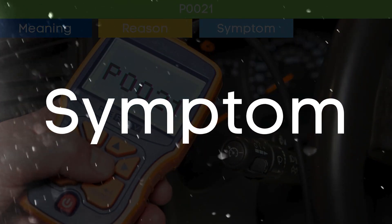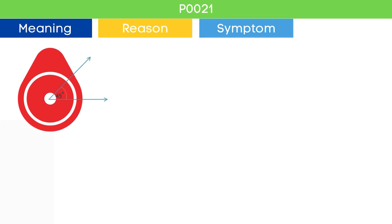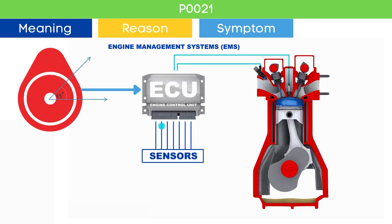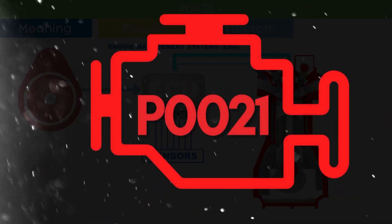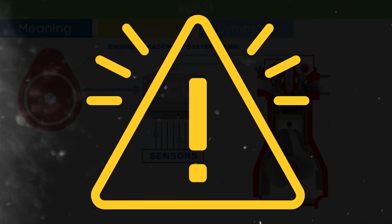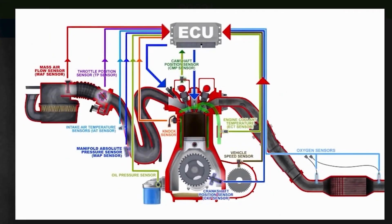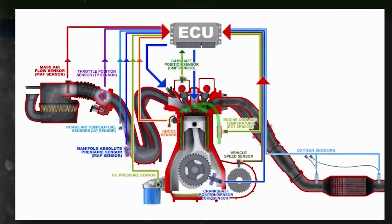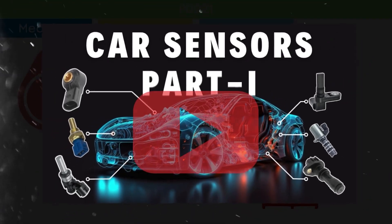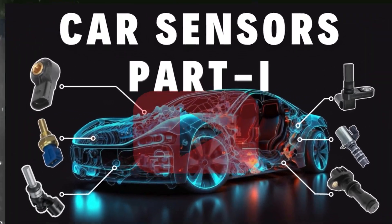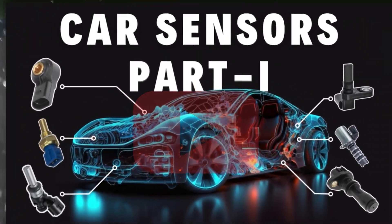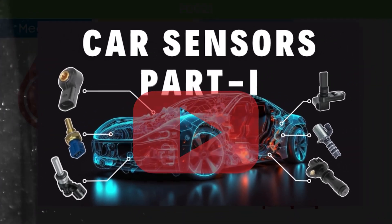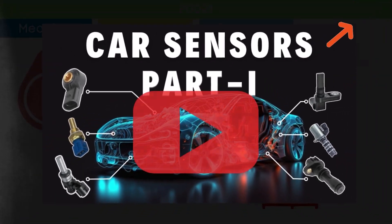Now that we know what P0021 is, let's dive into its symptoms. Cam angle is a very crucial parameter in engine management systems to optimize engine performance. The ECU also relies on other EMS sensor inputs. To learn more about sensors of the engine management system, you can check our detailed video on car EMS sensors — link in the corner.